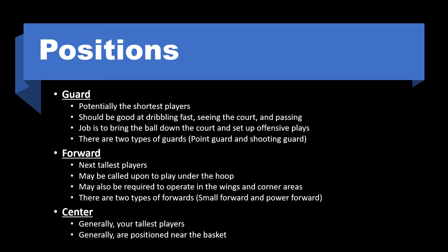Here are some descriptions of each position. The guard, potentially the shortest players, should be good at dribbling fast, seeing the court, and passing. Their job is to bring the ball down the court and set up offensive plays; there are two types of guards. Forwards are the next tallest players; they may be called upon to play under the hoop and may also be required to operate in the wings and corner areas — there are two types of forwards. The center is generally the tallest player and is generally positioned near the basket.